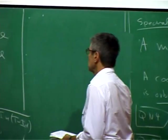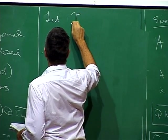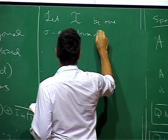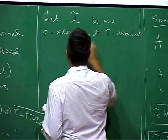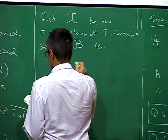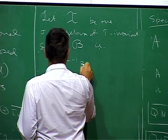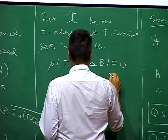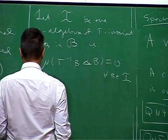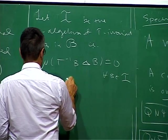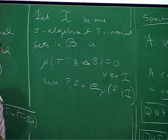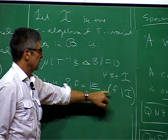But I would like to make a comment. By T invariant, I mean that the measure of T inverse B symmetric difference with B is equal to zero. So if I think slightly probabilistically, then this projection is in fact the expectation of F given I.